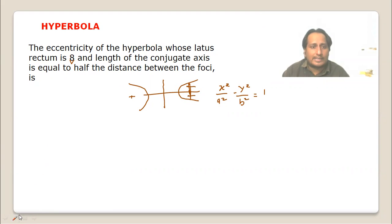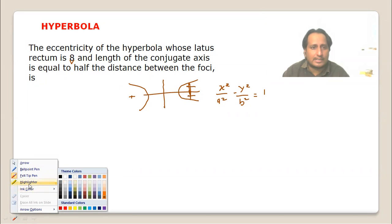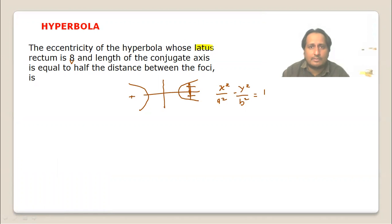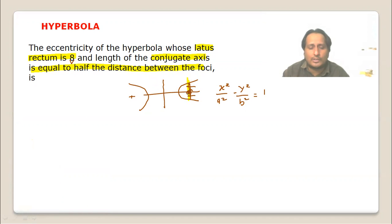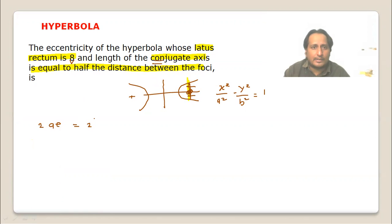We need to find eccentricity. Given: latus rectum = 8. Second condition: length of conjugate axis = half of distance between foci. The conjugate axis is 2b and the transverse axis is 2a. Distance between foci is 2ae, so length of conjugate axis 2b equals half of 2ae.